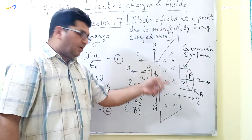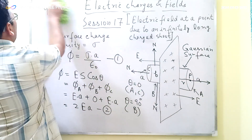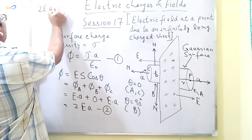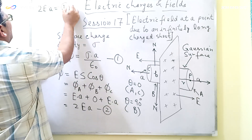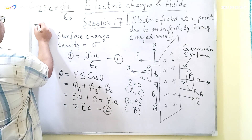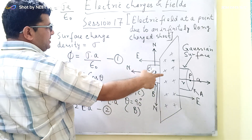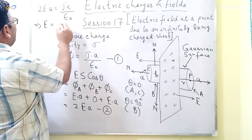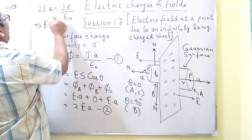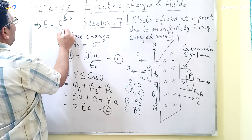From equations 1 and 2, we get 2EA equals Sigma times A divided by epsilon-naught. The A cancels out on both sides, giving us the intensity of the electric field at point P equal to Sigma divided by 2 epsilon-naught.